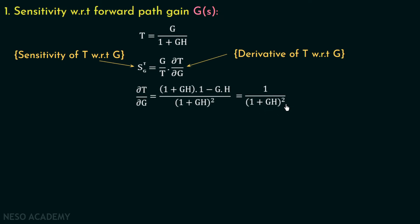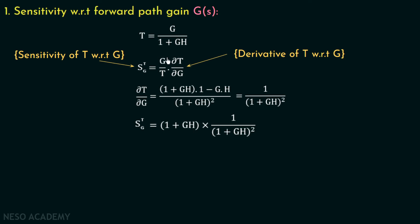In the numerator, plus GH and minus GH cancel, giving us 1 over 1 plus GH whole squared. Now substituting del T over del G into the sensitivity expression, del T over del G is multiplied by G over T. From T equal to G over 1 plus GH, we get G over T equal to 1 plus GH. So S_T^G equals 1 plus GH multiplied with 1 over 1 plus GH squared, which simplifies to 1 over 1 plus GH.